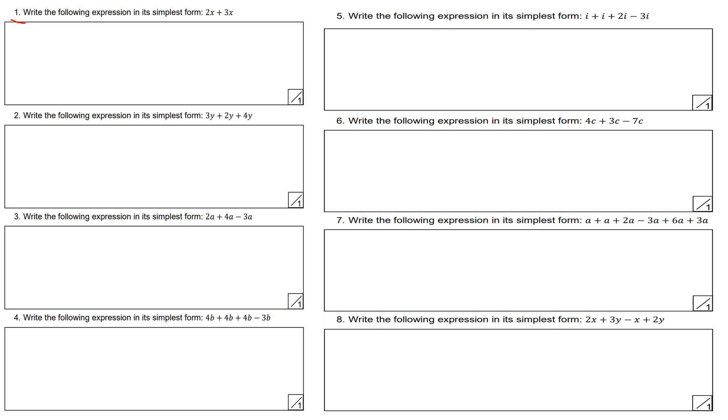Question 1, write the following expression in simplest form: 2x plus 3x. I'm going to collect like terms. Think of it as, I've got 2 pounds plus 3 pounds, in total I've got 5 pounds. Or I've got 5 lots of x, which is 5x. Think of it in that context, though that doesn't always apply or work.